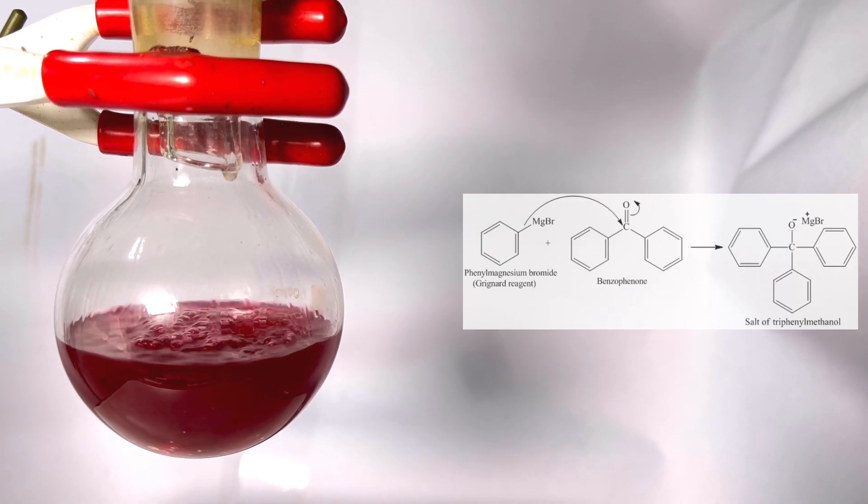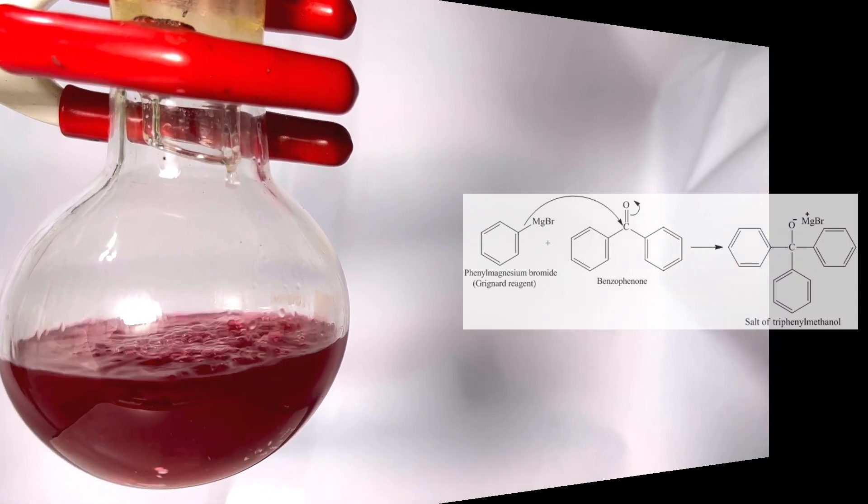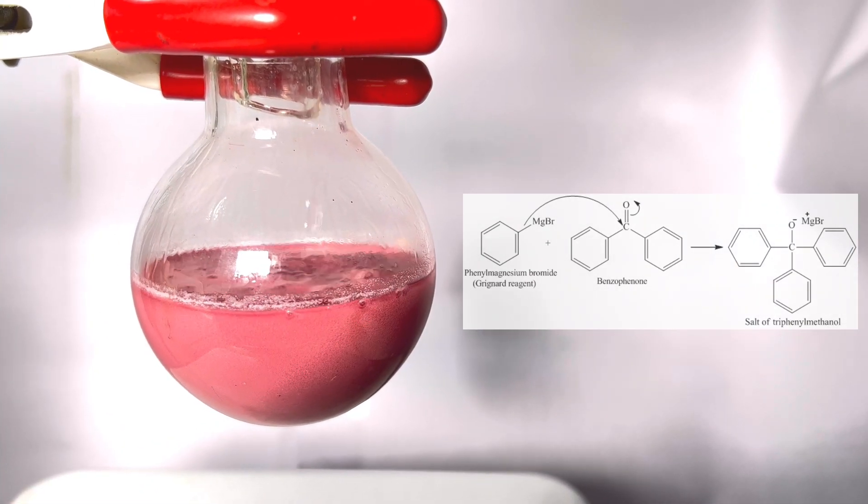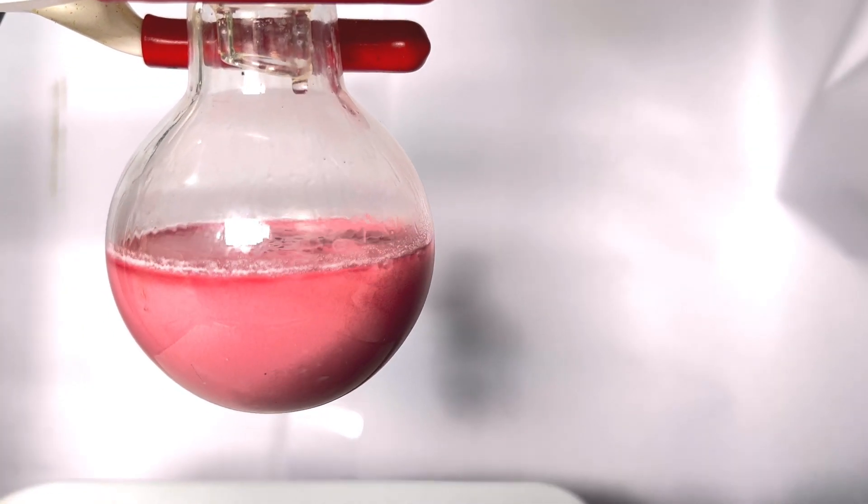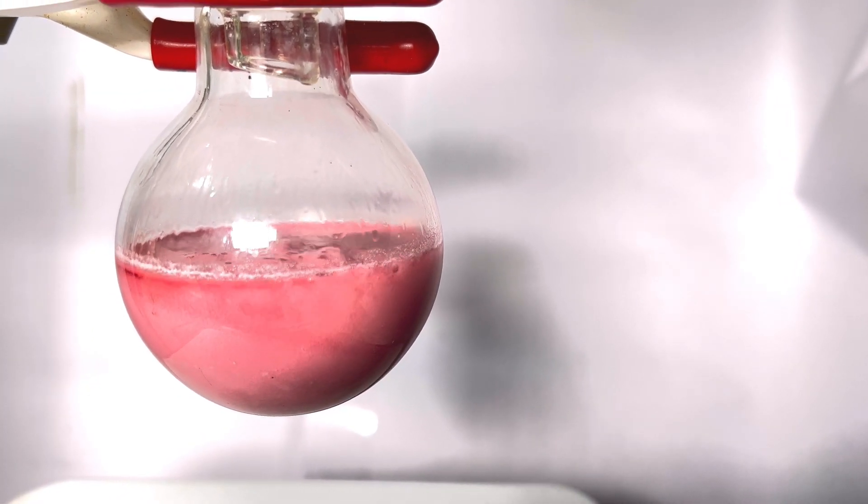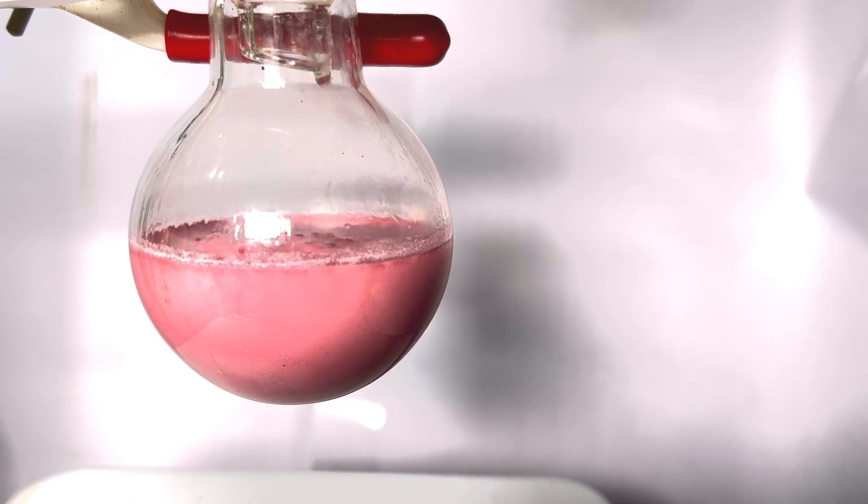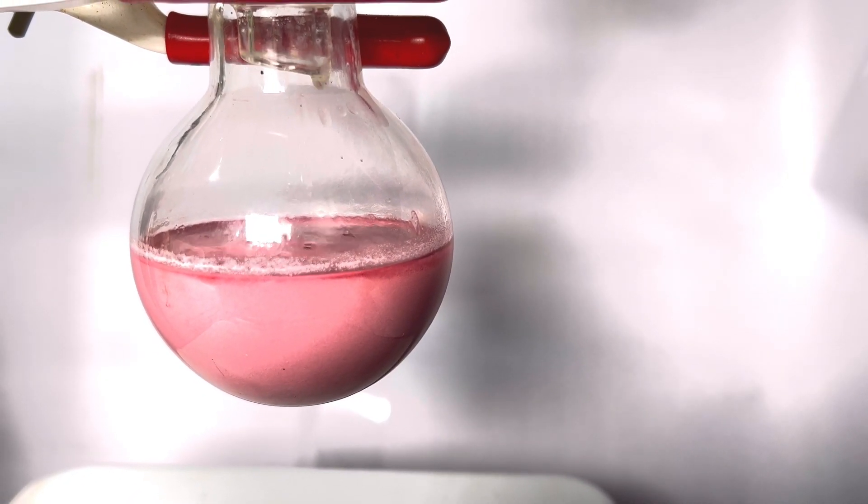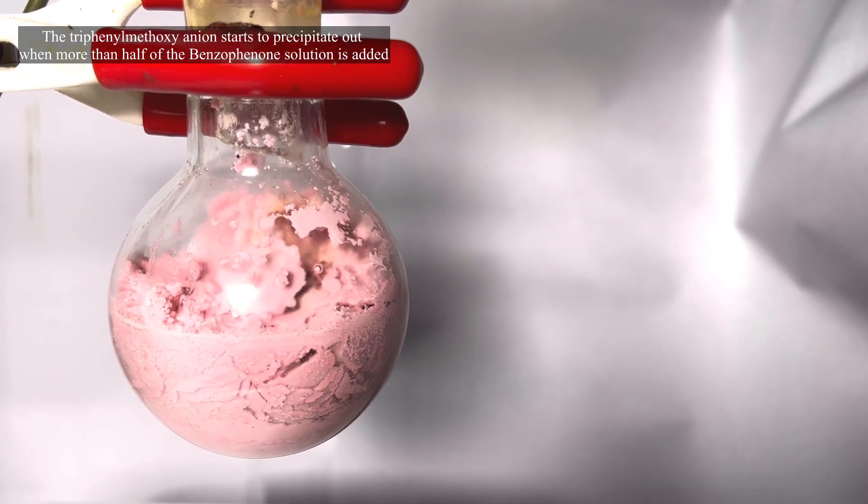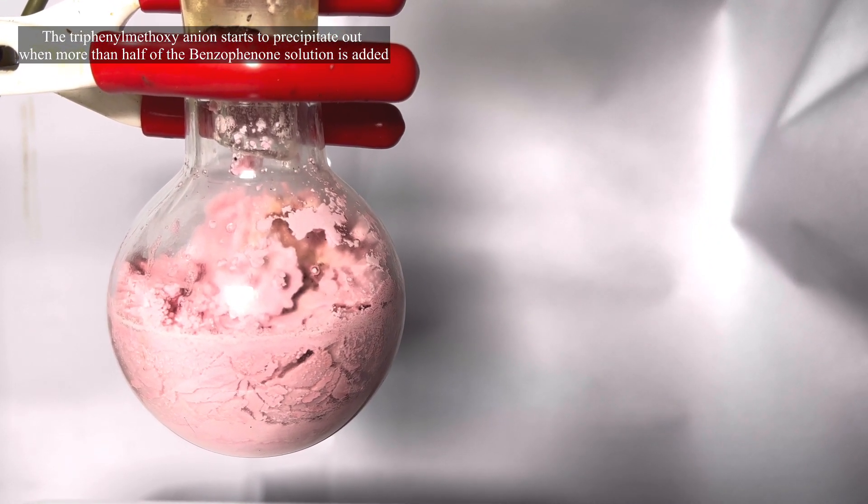After adding more than half of the benzophenone solution, you will see the development of a crystalline precipitate. The triphenyl methoxy anion becomes so much saturated in ether that it comes out of the solution. It comes in such a voluminous amount that even the stirring bar gets entrapped in it and the stirring stops. This is what we see after the addition of complete benzophenone.